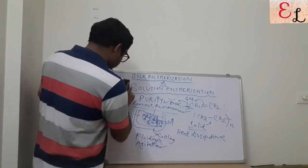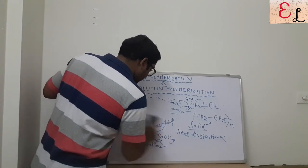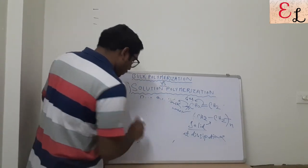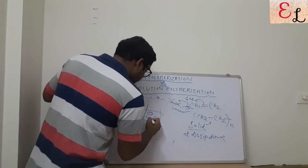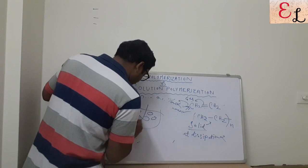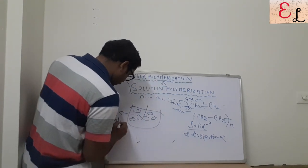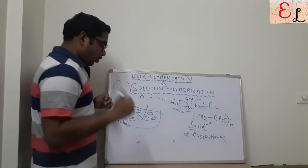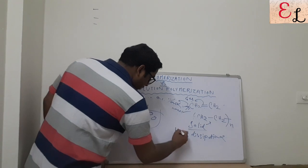Now coming to solution polymerization. As already mentioned, there is a solution along with the monomer structure — the monomer is carried by the solution, which is acting as a carrier for the monomer. So talking about heat dissipation — heat dissipation is a plus in solution polymerization.